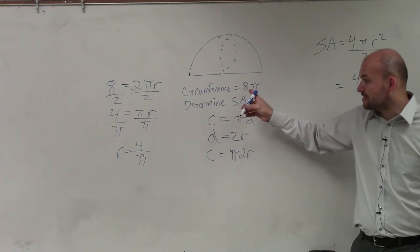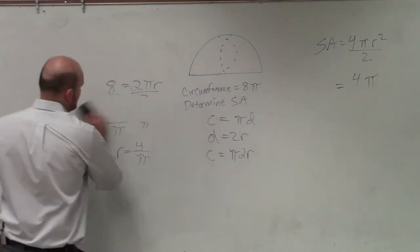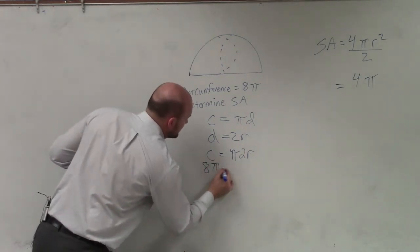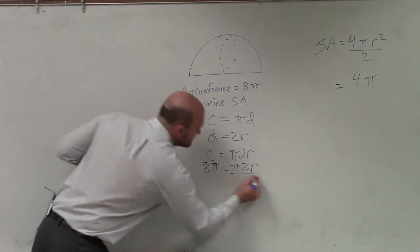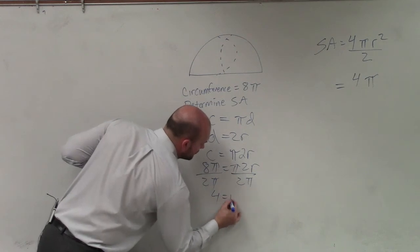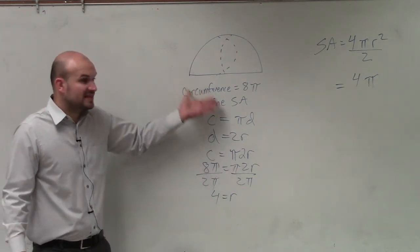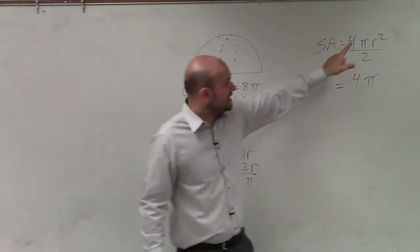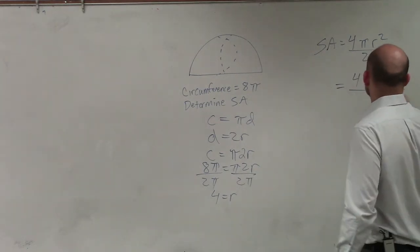Then our circumference, they tell us the circumference, which is 8π. Oh, that's where I made the mistake. It's 8π. So the circumference is 8π equals π times 2r. So I divide by 2π. 4 equals r. So my radius of this hemisphere is 4. That's the radius I need here. So I plug in 4 squared divided by 2.